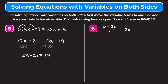Now I need to get the constants to the other side, so I move the negative 21 by adding 21 to both sides. On the left, the negative 21 and positive 21 cancel to 0, leaving 2x. On the right, 19 plus 21 is 40. Finally, to get rid of this 2 being multiplied by x, I divide both sides by 2: 2 divided by 2 is 1, leaving x on the left, and 40 divided by 2 is 20 on the right. So x equals 20.